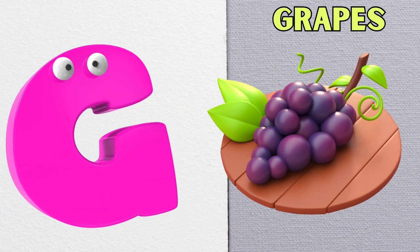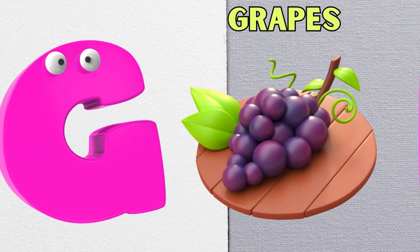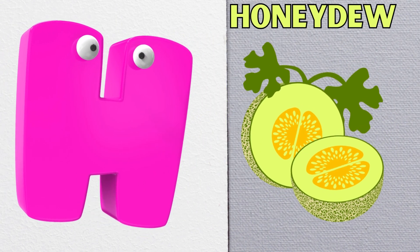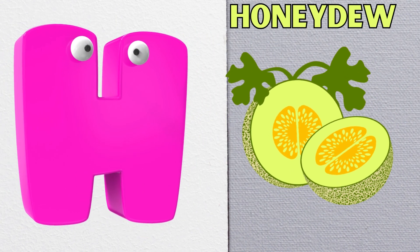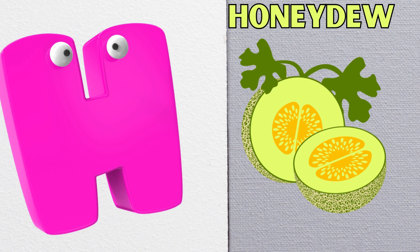G is for grapes, g-g-grapes. H is for honeydew, h-h-honeydew.